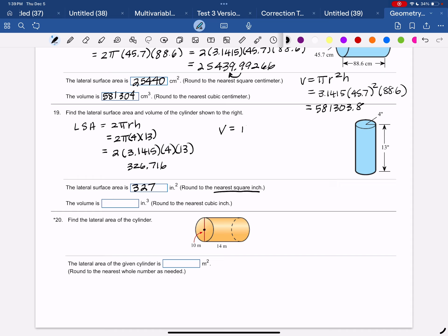Now the volume is going to be pi R squared height. So use the pi key or 3.1415, 4 squared times 13. 3.1415 times 4 squared times 13 is 653.432. So it's about 653 cubic inches.